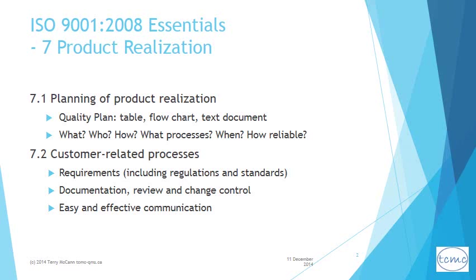Clause 7.1 states the requirement for a process to cover planning for product or service realization. The output is commonly referred to as the quality plan. Much flexibility is allowed in the form of the planning output, which could be, for instance, tabular, flowchart, or textual — whatever the organization considers suitable for its operation.